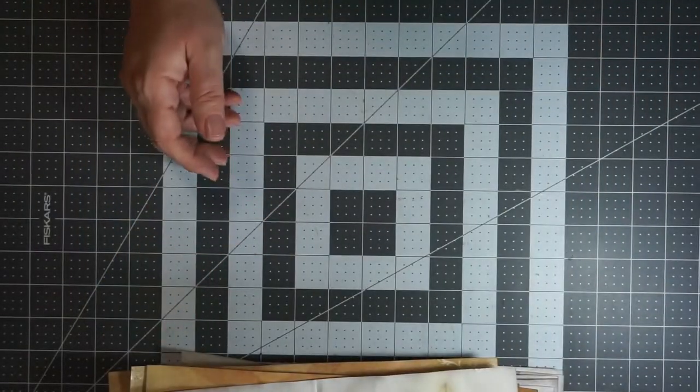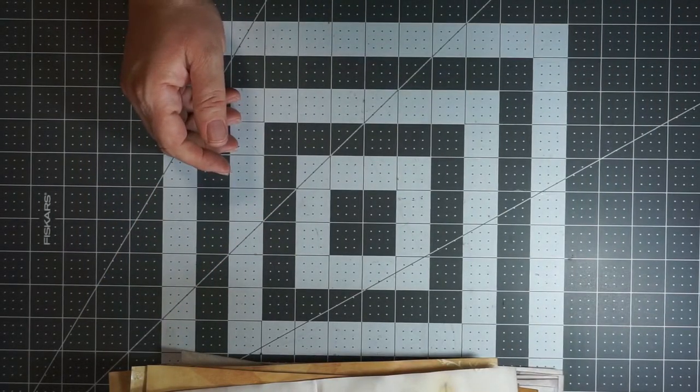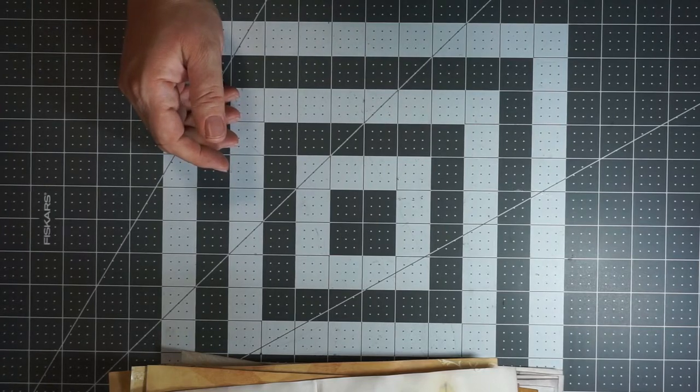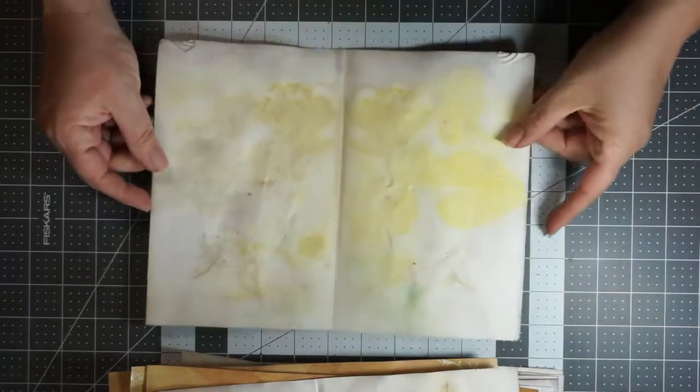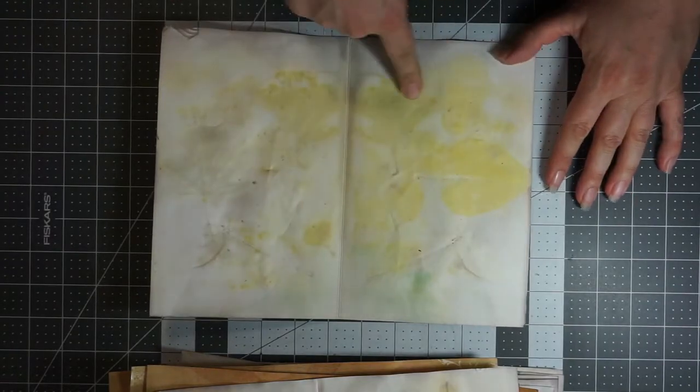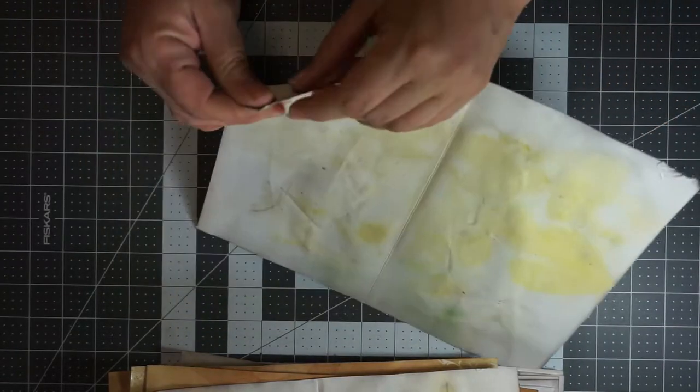So, I'm going to use these in my junk journals. And then, I have another piece of watercolor. Here's another watercolor. You can see the leaf impressions here. And they did come out kind of yellow. I'm not sure what happened here.